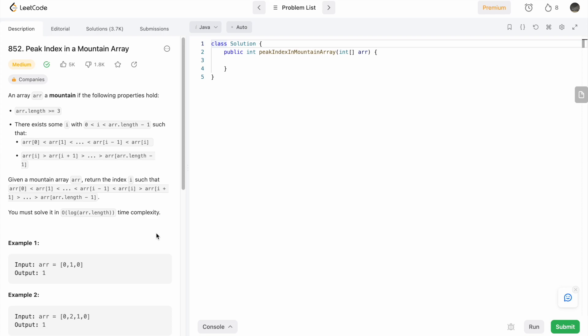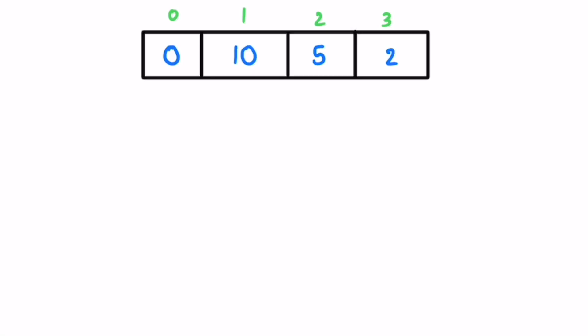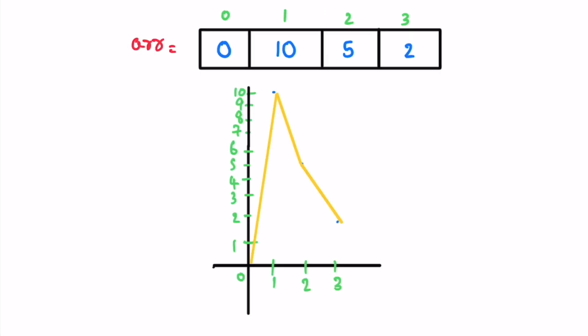Let's look at the first approach with O(n) time complexity using the same examples given. This is the array and you have to find the peak index inside the mountain array. The array increases from left to right, reaches the peak, and then decreases — that element is the peak index.